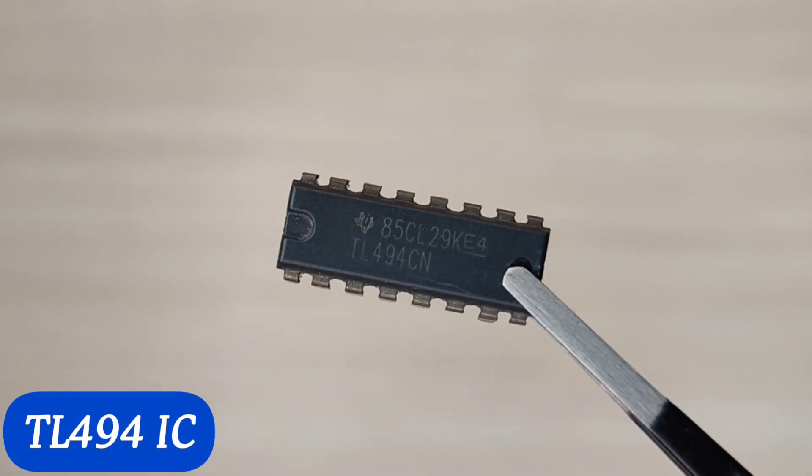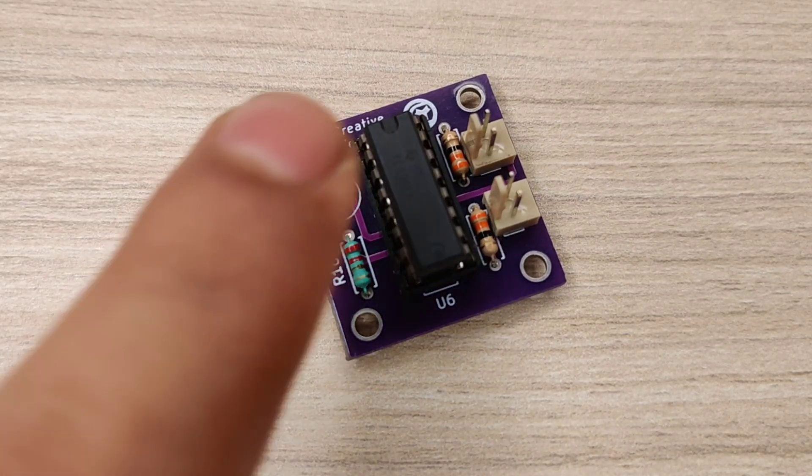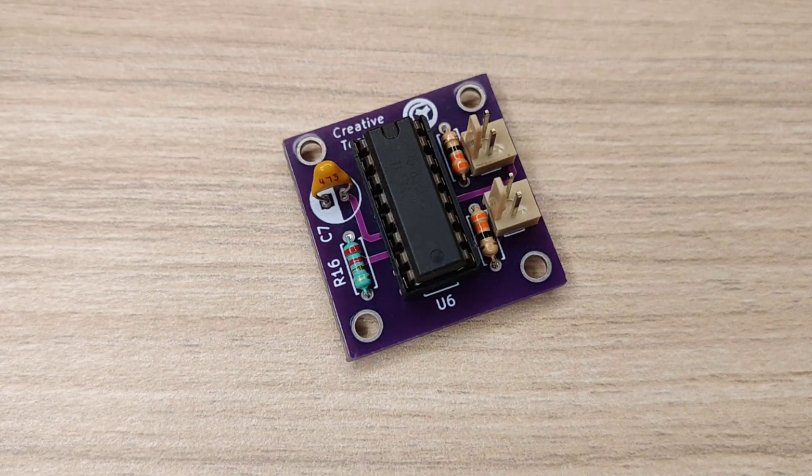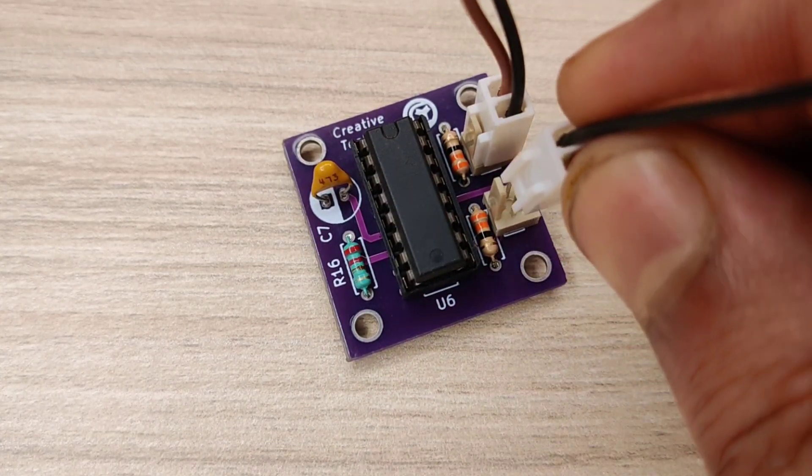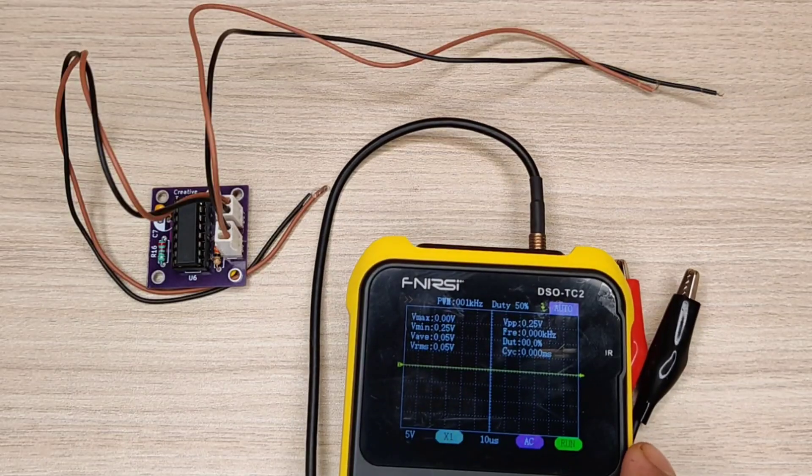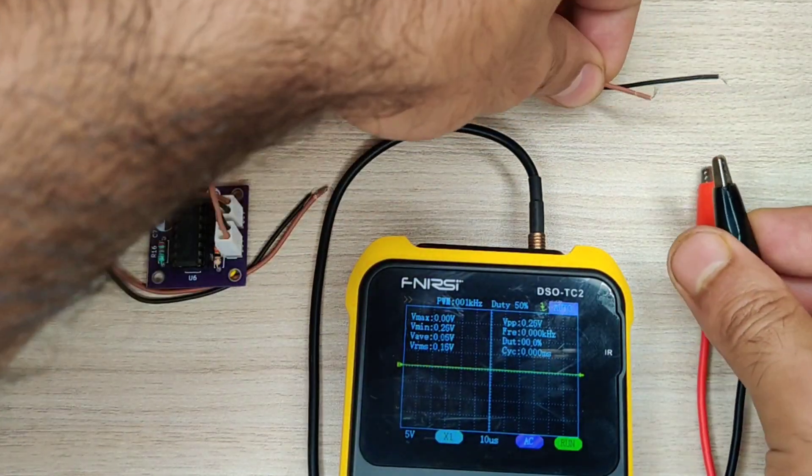Now install the TL494 IC into the IC base, connect the connectors. Now let's check the output frequency using this mini oscilloscope.